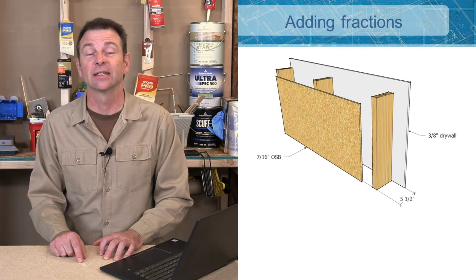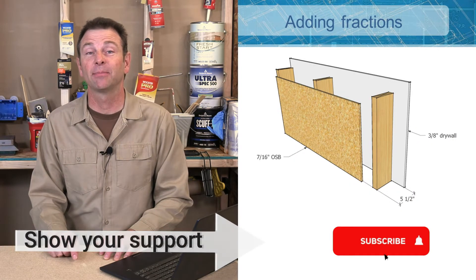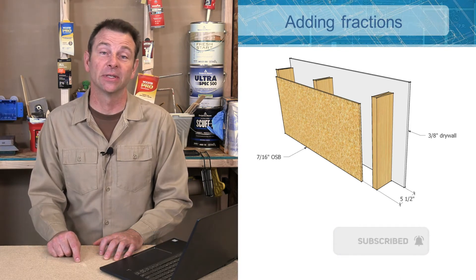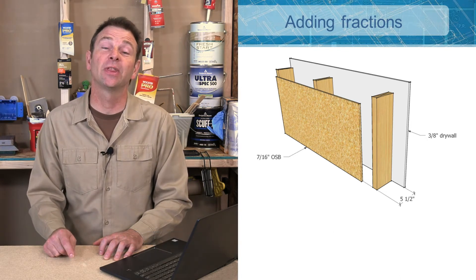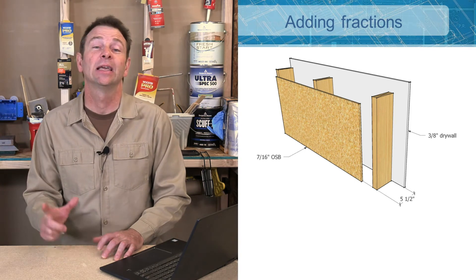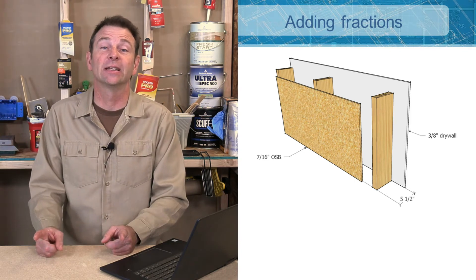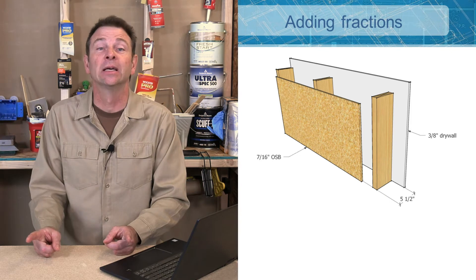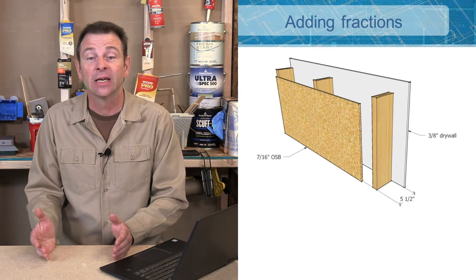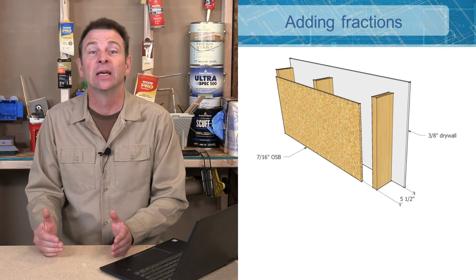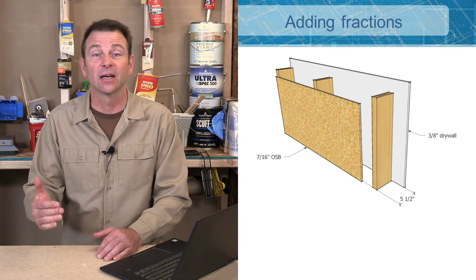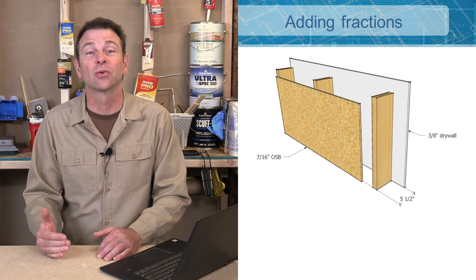Let's go over adding fractions together. In this particular example we have fractions that do not share a common denominator — if you need to review that, check out our student resources on that specific topic. In construction it's often necessary to calculate the width or the combination of materials put together. Here you see a wall being assembled from three different materials. You've got studs that are going to be five and a half inches wide.